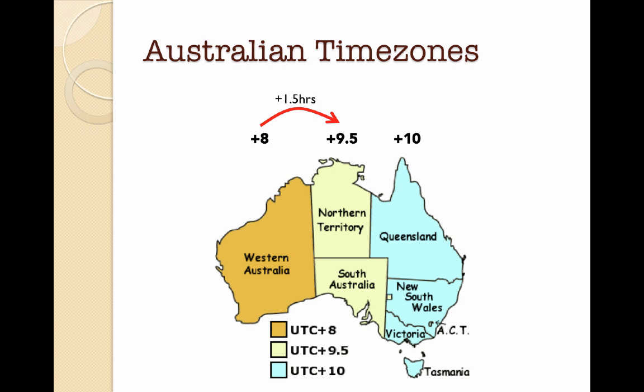If I wanted to work out how much further ahead Northern Territory and South Australia are compared to Western Australia, I would add 1.5 hours — one and a half hours — to whatever the time is in Western Australia. Equally, I could subtract to go the other way. For the eastern states — Queensland, New South Wales, Victoria — I would add half an hour onto the central time, or two hours on from the Western Australia time.